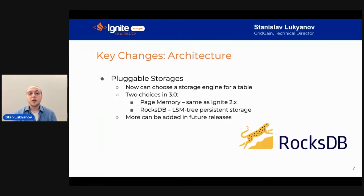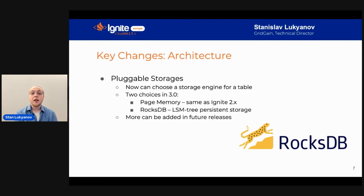On the storage side, Ignite 2 already has a pretty good storage called page memory — it works for in-memory and for persistence — but some use cases require other data structures that work better. For example, write-intensive applications work well on LSM trees. Ignite 3 adds an ability to choose a storage engine per table. Ignite 3 will have two engines: page memory, which is the same as Ignite 2, and RocksDB, which is an LSM implementation. Future Ignite versions will add more storage engines.